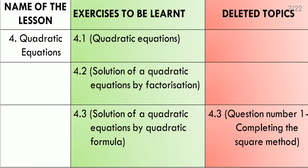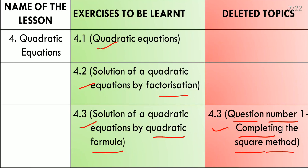Fourth lesson: Quadratic Equations. Exercise 4.1 is about identifying whether an equation is a quadratic equation or not. Exercise 4.2 covers solutions by the factorization method. Exercise 4.3 covers solutions by the quadratic formula. These three exercises are there. However, question number 1 of exercise 4.3, which is about the completing the square method, is fully deleted. We will not do that question, but the other methods can be applied to get the solution.